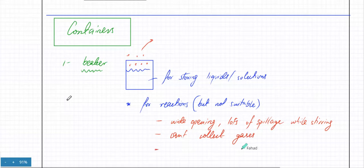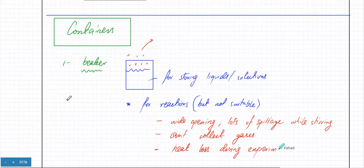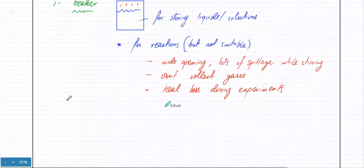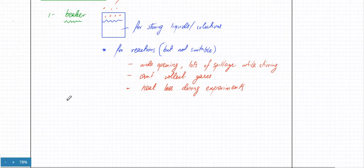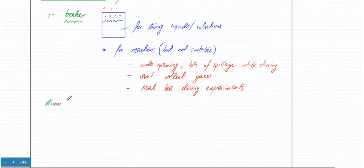Because the opening is very wide, there's going to be a lot of heat loss. So while you can do reactions in a beaker, it's not recommended. The next container, where a lot of reactions will actually take place, is known as a conical flask.